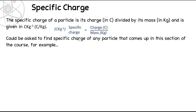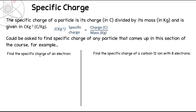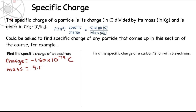You could be asked to find the specific charge of any particle that comes up in this section of the course. The first example is finding the specific charge of an electron. The first things you need to know are the charge and the mass in coulombs and kilograms. From the datasheet, the charge of an electron is equal to minus 1.60 times 10 to the minus 19 coulombs, and the mass of an electron is 9.11 times 10 to the minus 31 kilograms. It's important to use the actual masses and actual charges, not the relative mass and charges — that's covered in the last video.